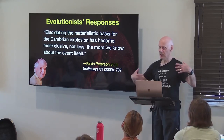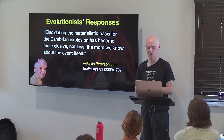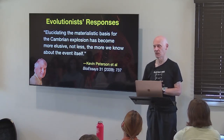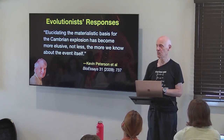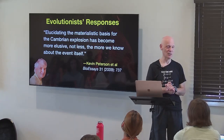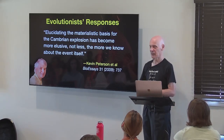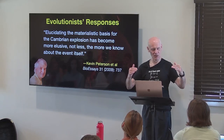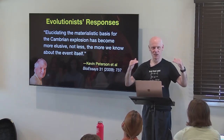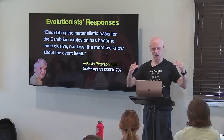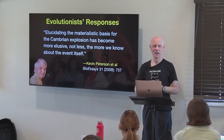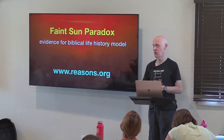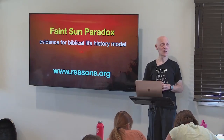I've debated evolutionary biologists on university campuses for years, and I always ask: have you taken into account solar astrophysics? The response is always: what does solar astrophysics have to do with the history of life on earth? The answer is: everything — because the problem with the naturalistic interpretation of the fossil record is that it assumes the luminosity of the sun never changes. It does change, and that change has a dramatic impact on how we interpret the fossil record. This is what's referred to in the scientific literature as the faint sun paradox.